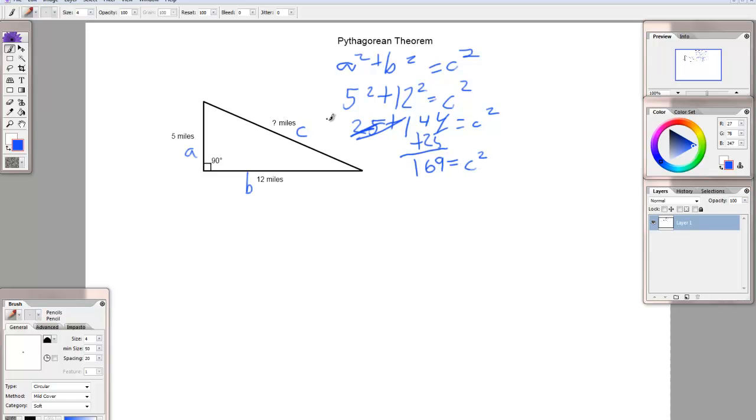Now, you want to know what c is, not c squared, so you need to get rid of this square here. And the way you get rid of that is by taking the square root of something. So, the square root of c squared is c, and c equals the square root of 169. So, now you just need to find out what the square root of 169 is.